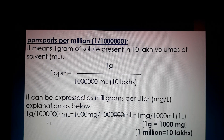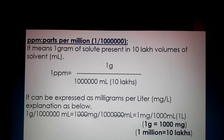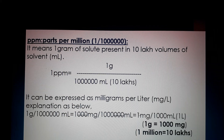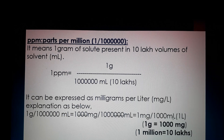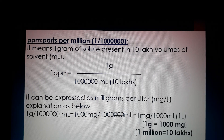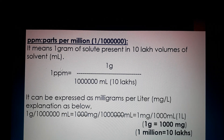To see how this comes about: one gram is equal to 1000 mg. If we calculate, one gram per 10 lakh ml gives us one mg per 1000 ml of solvent, which means one mg per liter. So a one mg per liter solution is a one PPM solution.